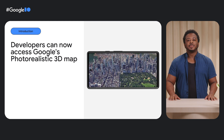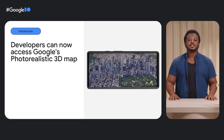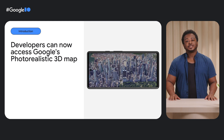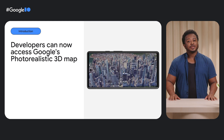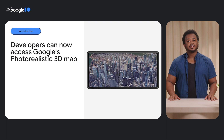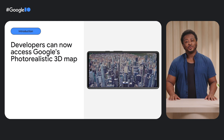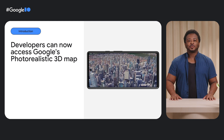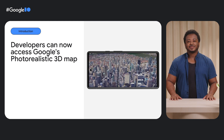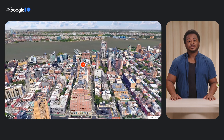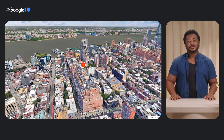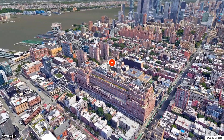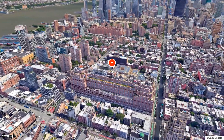Developers can now access Google Maps Platform's photorealistic 3D map via our Maps Tiles API. With this data, you have the freedom and control to build stunning experiences for your web, mobile, desktop, and in-car applications, with one of the world's most comprehensive 3D maps. For developers who want quicker access to immersive 3D visualization experiences with lower latency, you can now create aerial videos of places with our new Aerial View API.